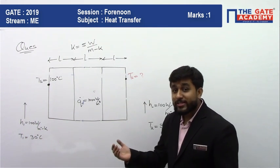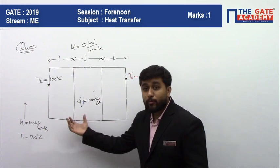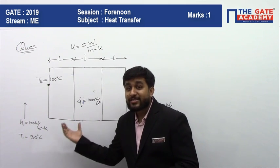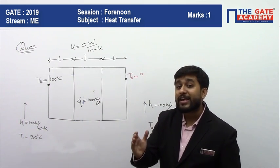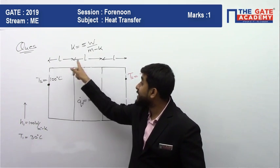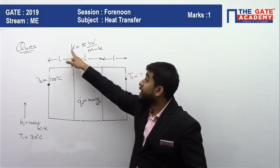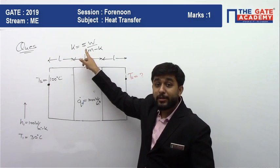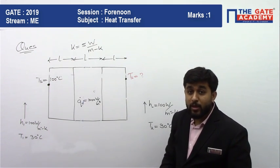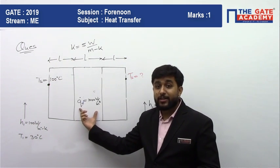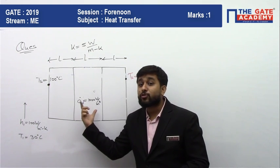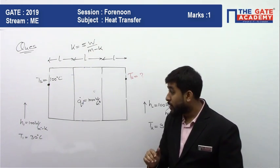There is a composite body which has three layers, all the layers have the same thickness, all the layers have the same material. But only the intermediate layer has an internal heat generation of QG dot.